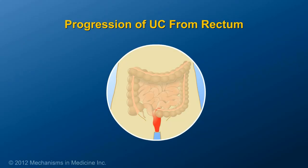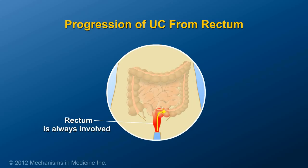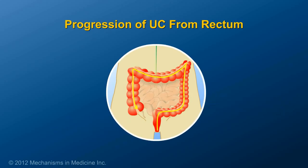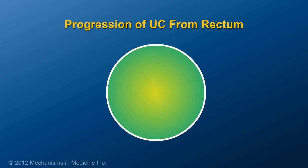In ulcerative colitis, the rectum — the last 6 inches of the large intestine — is always involved. The inflammation may involve additional areas of the large intestine above this area. In some patients, the inflammation may extend further up into the colon, and it is thought that in some patients, the inflammation extends higher up over time.